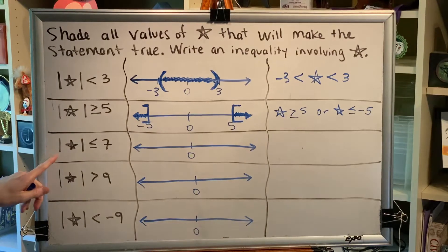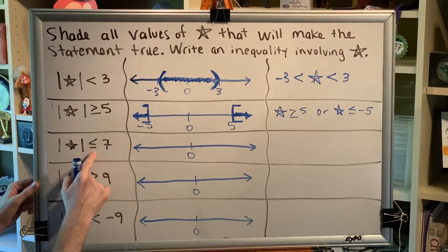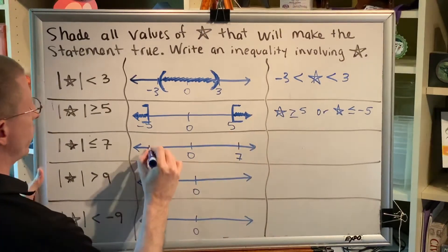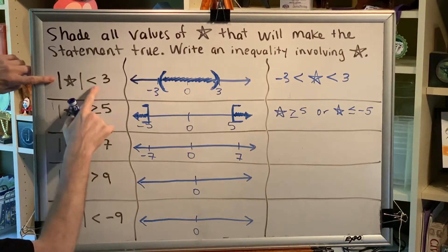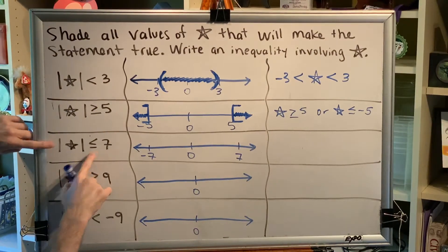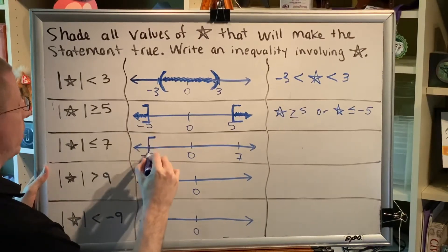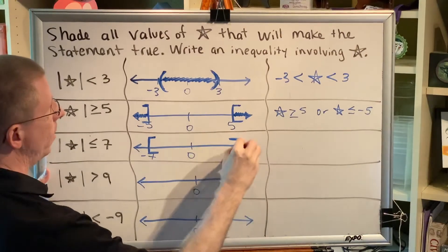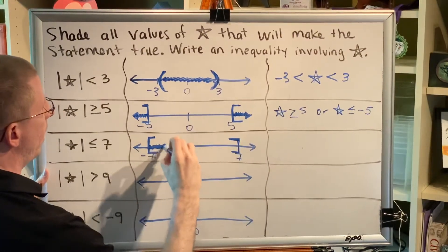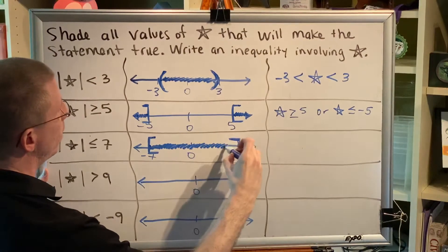Next. Absolute value of star is less than or equal to 7. So this is like a dog on a 7-foot leash. The only difference between this problem and this one up here is that the one up here said less than, and this one says less than or equal to. The numbers are also different, of course. So that means that we're going to create a graph that looks like this. A bracket at 7, a bracket at negative 7, and a dog on a leash has to stay in between these two spots.